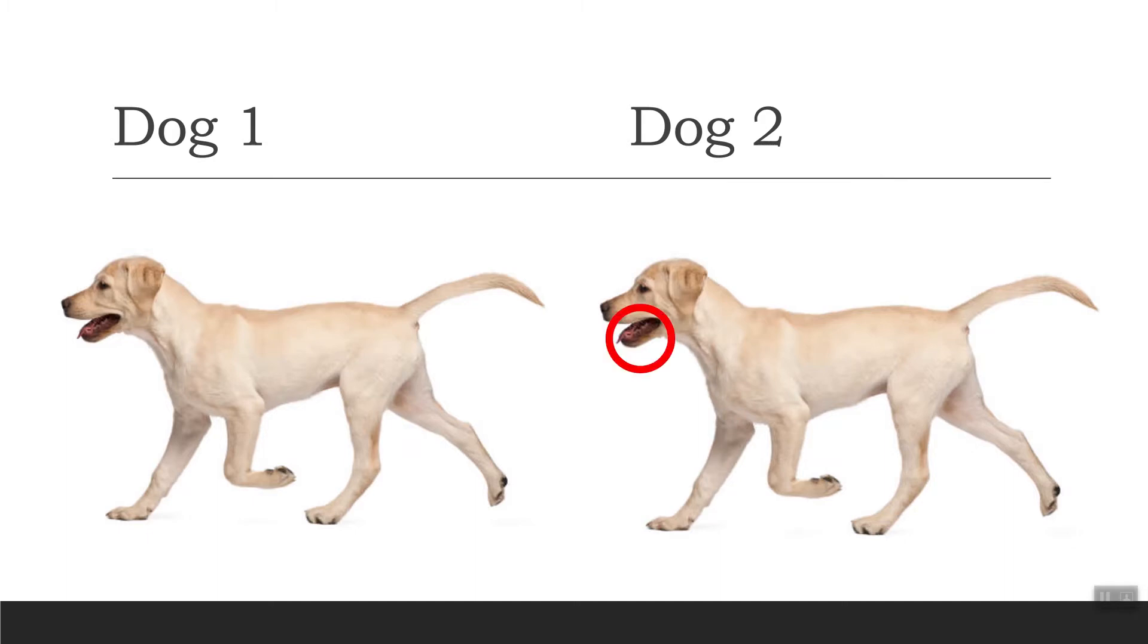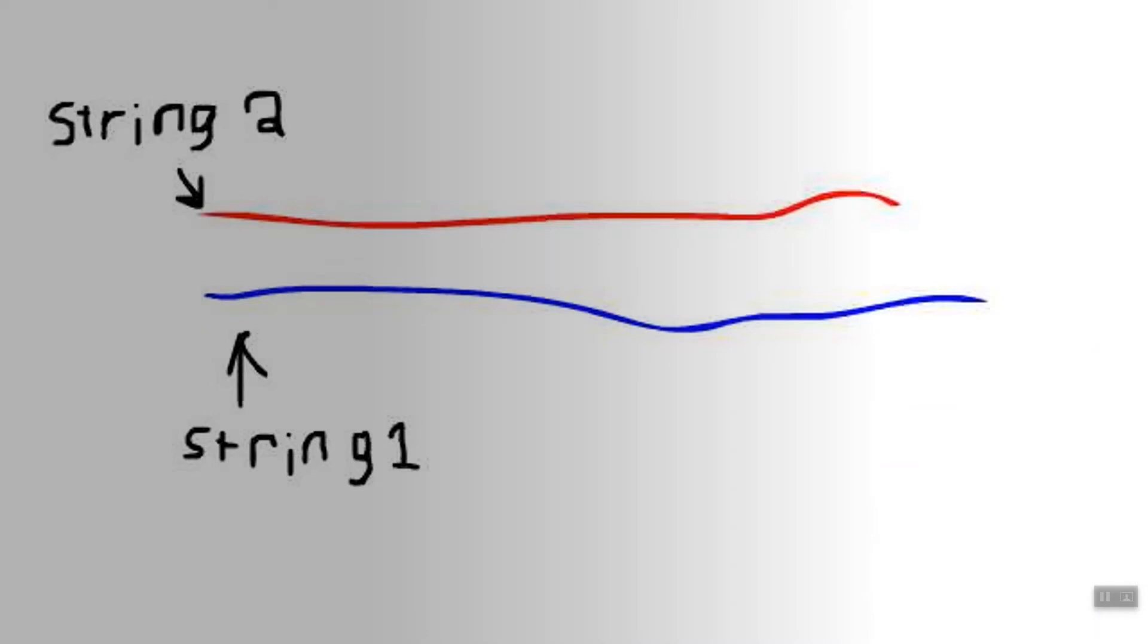Now you may be saying, Sam, that looks nothing like a cat, and you would be correct. Moving on, as you can see here, we have two pieces of string.